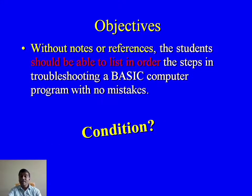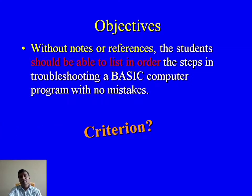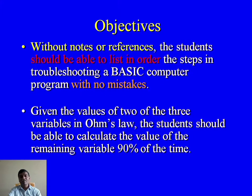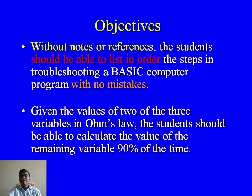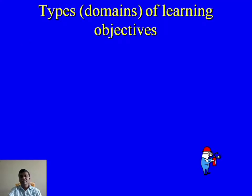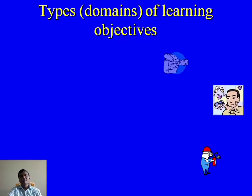'With no mistakes' is the criterion. Another example: 'Given the values of two of the three variables in Ohm's Law, the students should be able to calculate the value of the remaining variable 90 percent of the time.' This demonstrates behavior, condition, and criterion clearly.